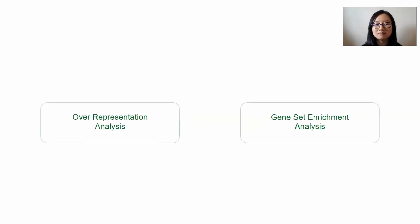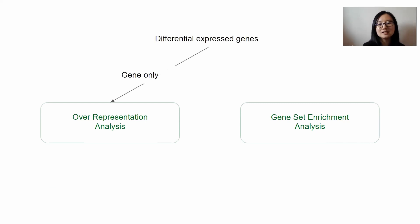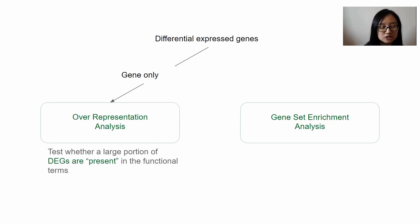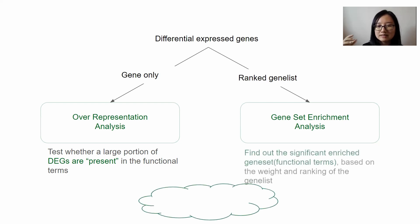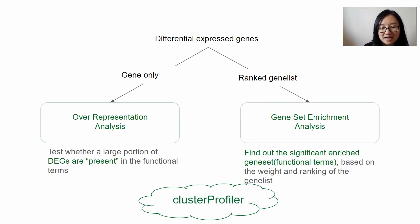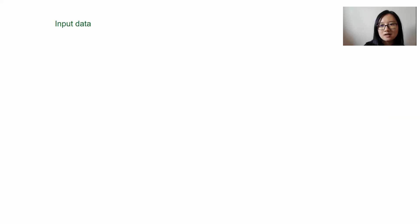So this is how gene set enrichment analysis works: we get the normalized enrichment score and the adjusted p-value. We obtain the normalized enrichment score to rank the enrichment terms in your gene list, and then we use the adjusted p-value to determine whether the enrichment is significant or not. At this point you should be clear on the difference between these two analyses: for over-representation analysis we use a subset of DEGs and test whether a large portion of DEGs are present in the functional terms; for gene set enrichment analysis we use a ranked gene list by log2 fold change value and find the significantly enriched gene sets based on the ranking.